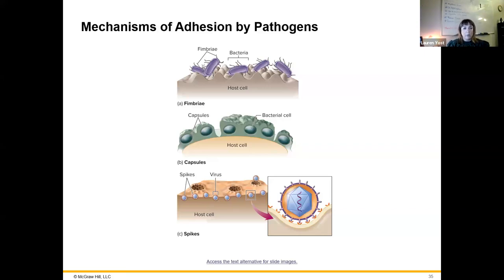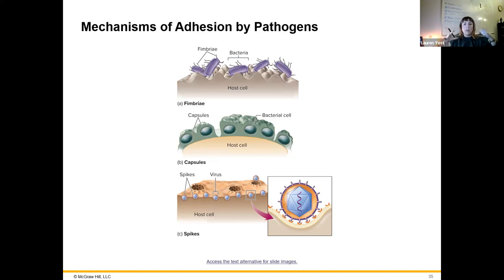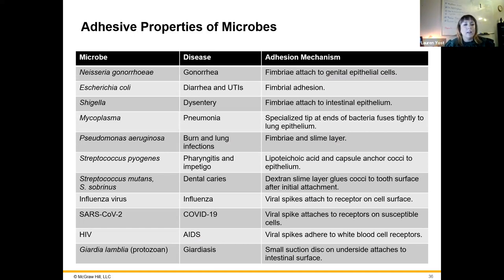How can we adhere? We have fimbriae — these are hair-like extensions off the cell just for adherence. Then we have capsules, which are a sticky outer coating. This virulence factor allows for evasion of phagocytosis and also allows for adherence to target cells. Viruses dock with host cells using glycoproteins — sugar plus protein from the virus interacts with host cell receptors, the key fits the lock, and that triggers the cell to engulf it and release the genome.